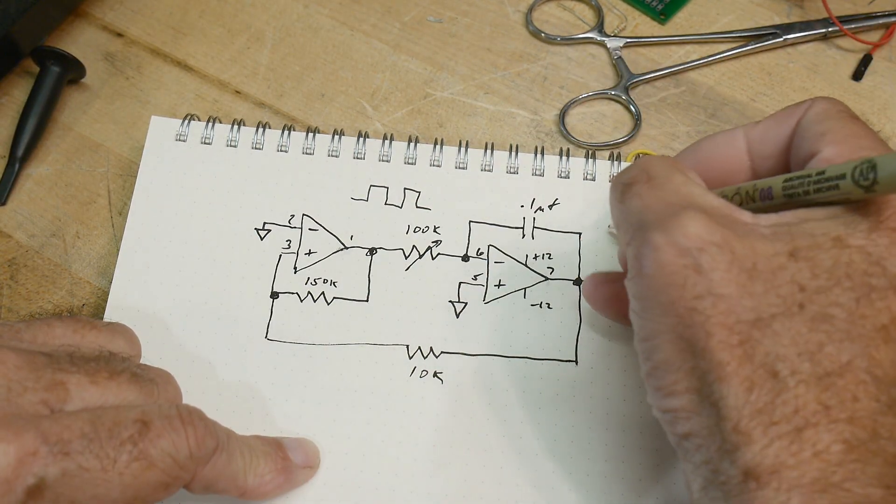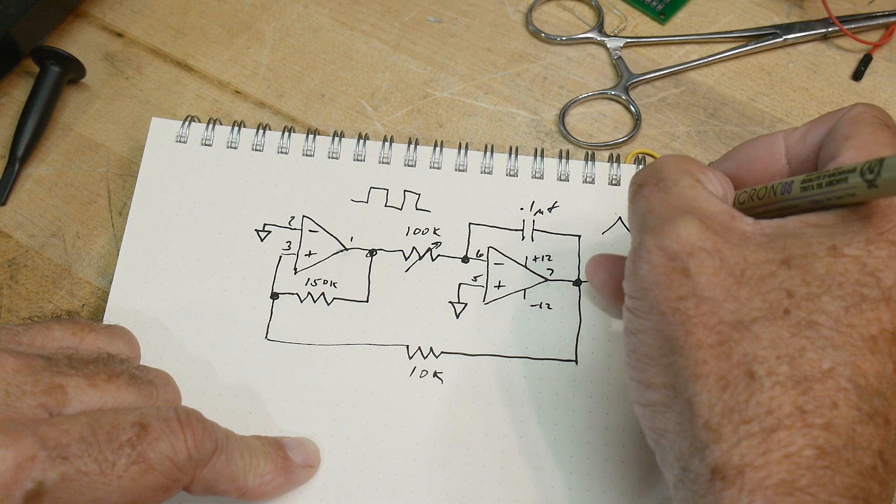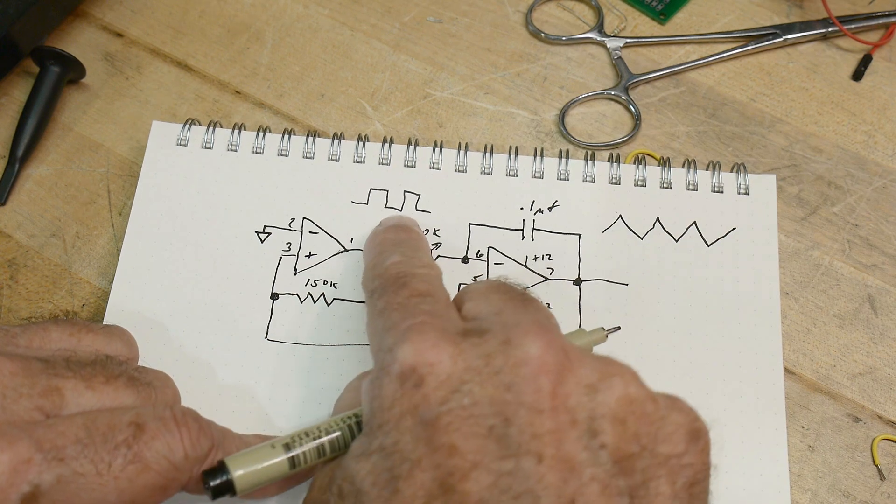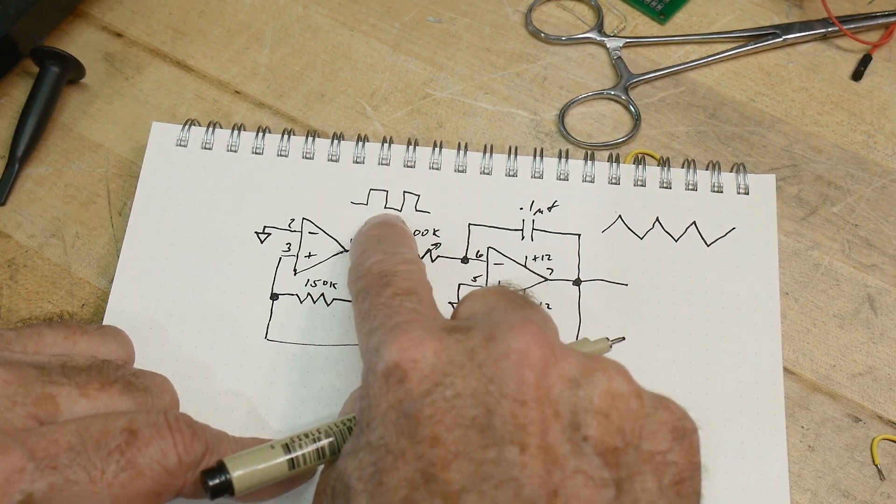I already have the square wave here, but over here we're getting a triangle wave, right? We're getting a nice triangle wave. This one's going up and down 12 volts; this one's going up and down one volt.